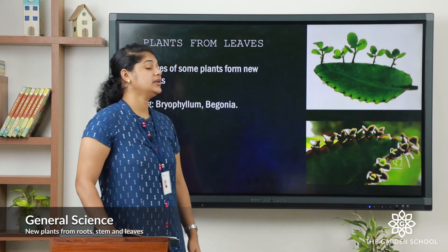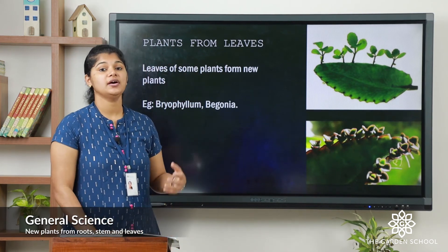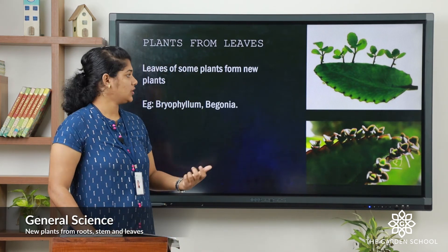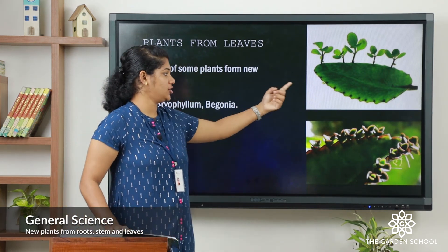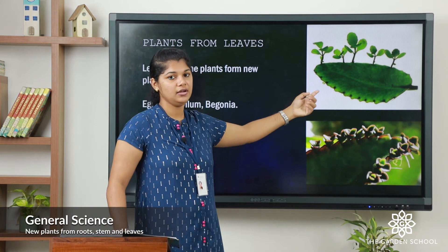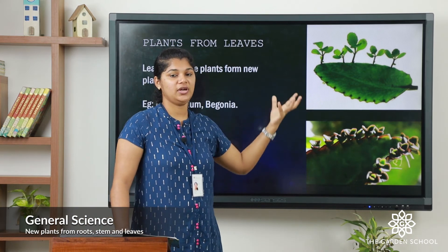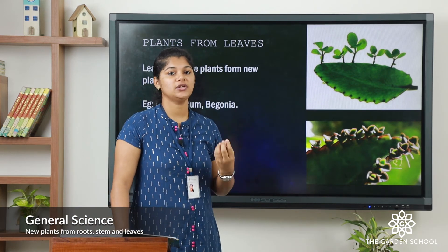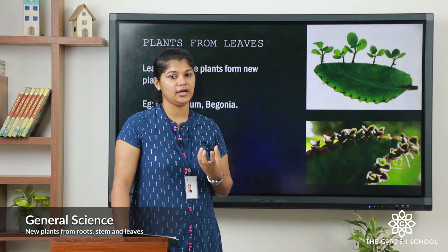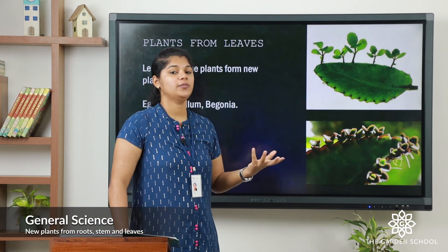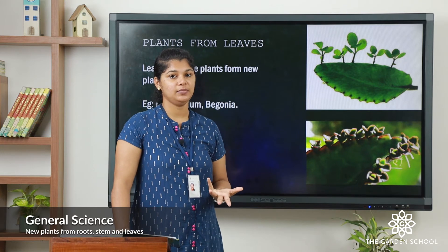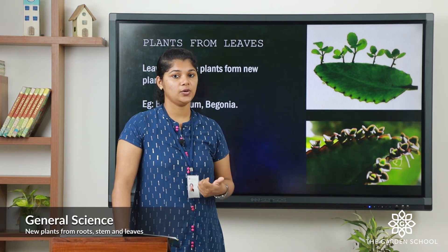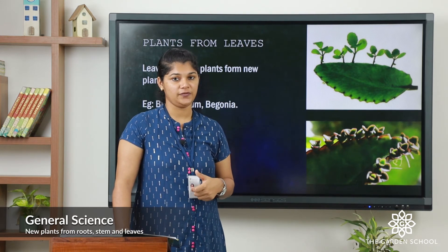The next one is plants from the leaves. You can see the mature leaves there. From a mature leaf, a new plant can grow. The best examples are begonia and bryophyllum.